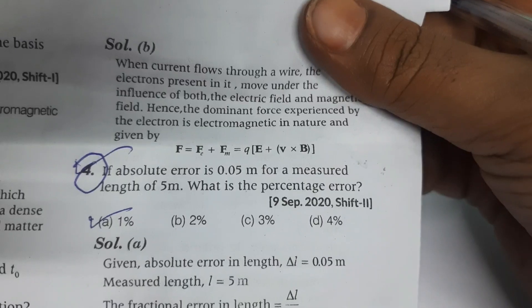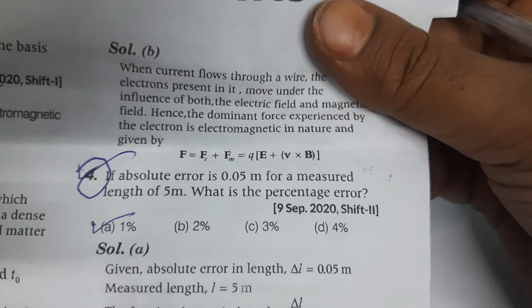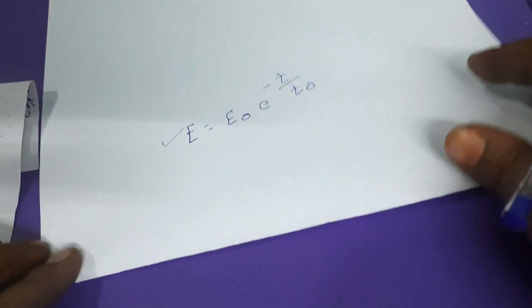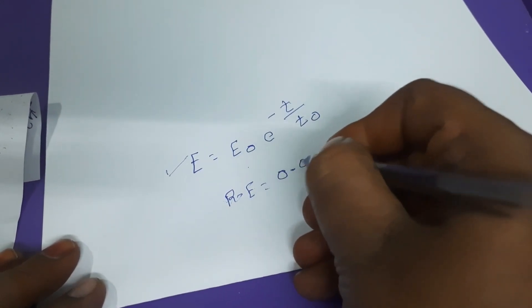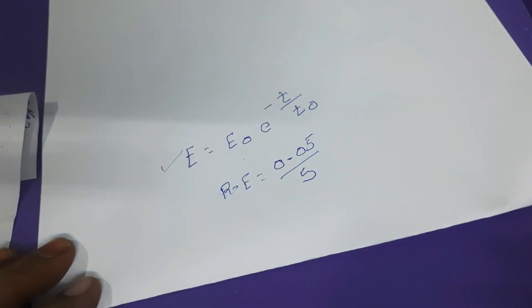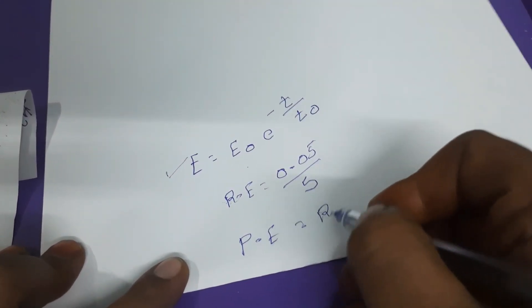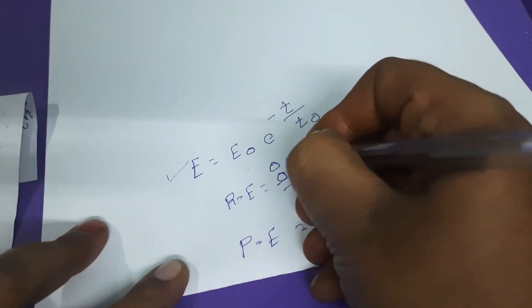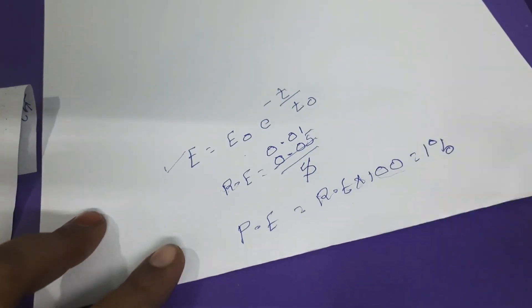The fourth question: the absolute error in measurement of length is 0.05 meters and the measured length is 5 meters. What is the percentage error? Relative error = absolute error / measured length = 0.05 / 5 = 0.01. Percentage error = relative error × 100 = 0.01 × 100 = 1%. This is the percentage error — a very simple answer.